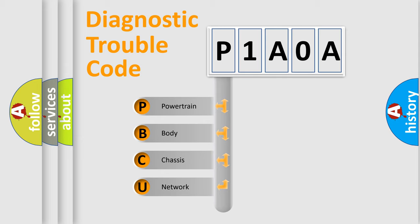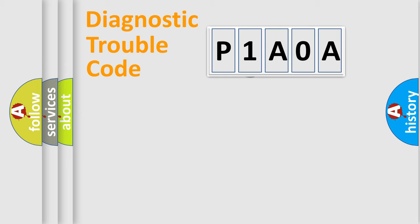We divide the electric system of automobile into four basic units: Powertrain, Body, Chassis, and Network. This distribution is defined in the first character code.